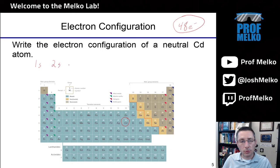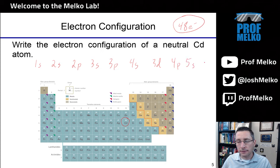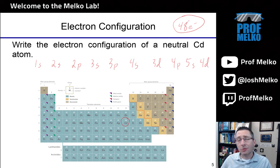Then I write out the sublevels in the order I've memorized them: 1S, 2S, 2P, 3S, 3P, 4S, 3D, 4P, 5S, 4D — and maybe I'll need more than that. We'll see. Now I'm going to start with these 48 electrons and begin filling them in.